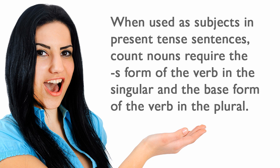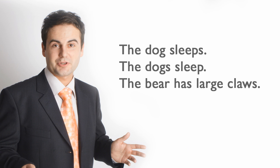When used as subjects in present tense sentences, count nouns require the s-form of the verb in the singular and the base form of the verb in the plural. For example: The dog sleeps. The dogs sleep. The bear has large claws.